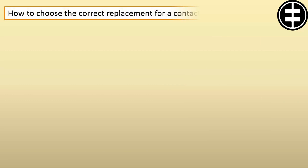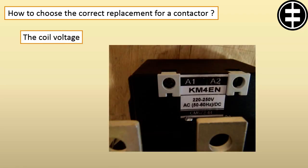How to choose the correct replacement for a contactor? First, you have to check the coil voltage. It is the control voltage which is used to energize the contactor, and you can find it printed on the contactor between A1 and A2. It must be the same as the used contactor.